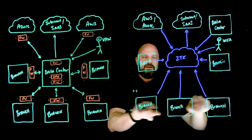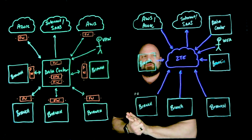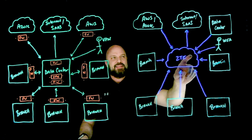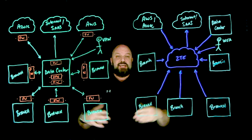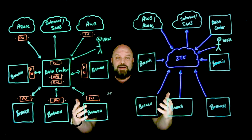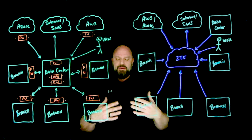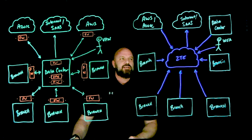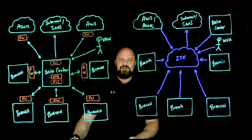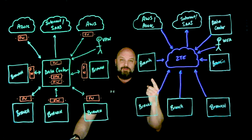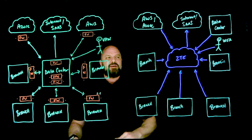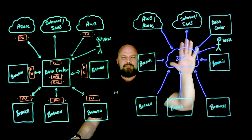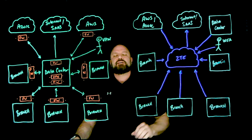Everything just goes towards the Zero Trust Exchange. For traffic that is eventually going out to internet or SaaS, we're going to hide those IP addresses of your assets back behind the Zero Trust Exchange. As Kenny Chesney almost said: no firewalls, no VPNs, no problems. You don't have to worry about that stuff in zero trust architecture.